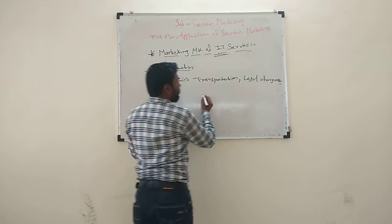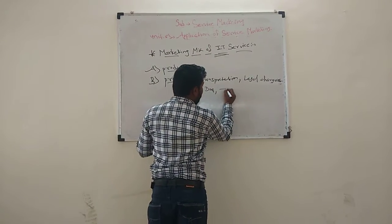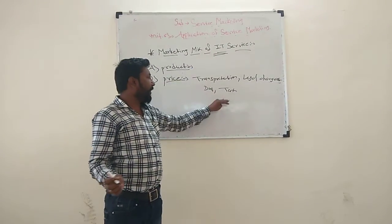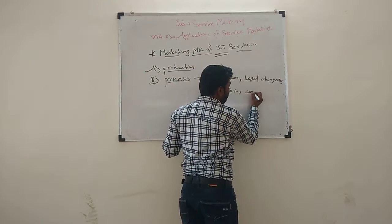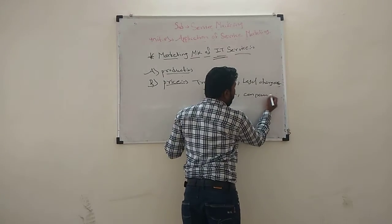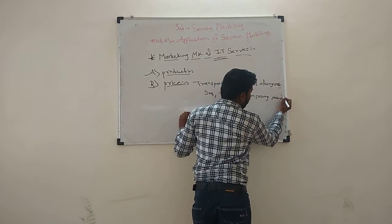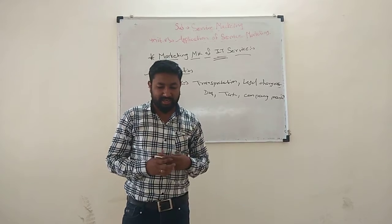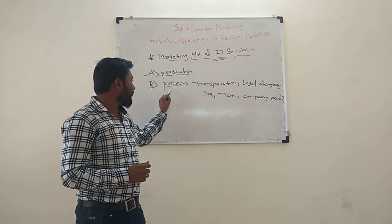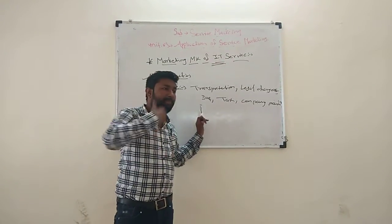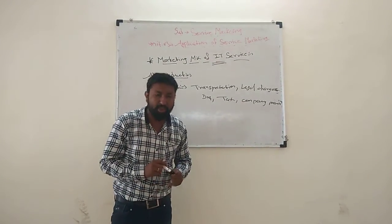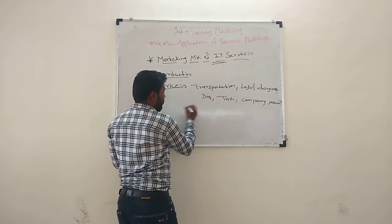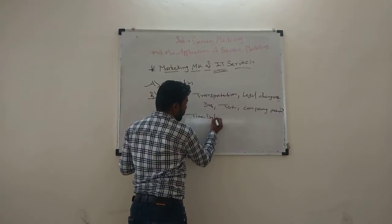Price components include documentation, taxes, transportation charges, and legal charges. The IT department determines the price, and the company also considers maintenance. The maintenance contract price is important — after software application, the software will provide a service and the price will be set accordingly. The time limit is also a factor in determining price.